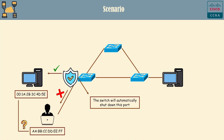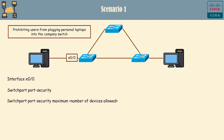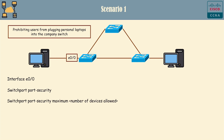Let's explore four different scenarios to understand the concept of port security better. Case 1 – Prohibiting users from plugging personal laptops into the company switch. Let's assume that port E0/0 is currently connected to a company PC. With this command, the default is to allow only one MAC address to appear on the switch port. This command specifies the number of devices allowed on this port.